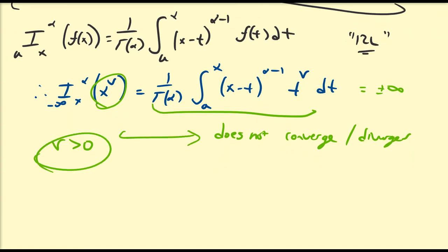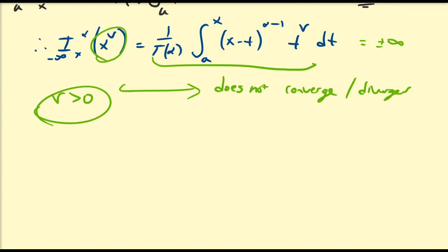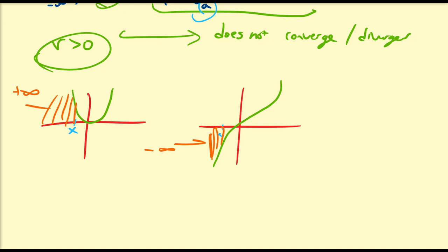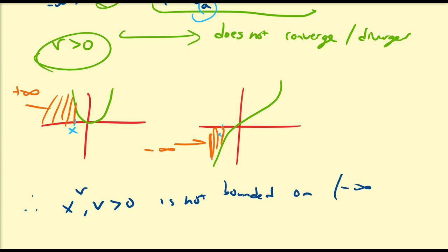Why is this true? If we look at x to the nu — say even functions like x squared, or odd functions like x cubed — we're taking the integral from minus infinity to some number x. For the even case, we have a positive infinite quantity; for the odd case, a negative infinite quantity. In either case it diverges. This is because the function x to the nu for nu greater than zero is not bounded on the interval minus infinity to t, where t is some finite number, due to the unbounded nature of polynomial functions in general.